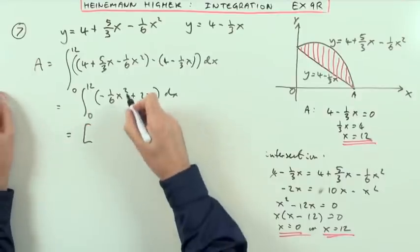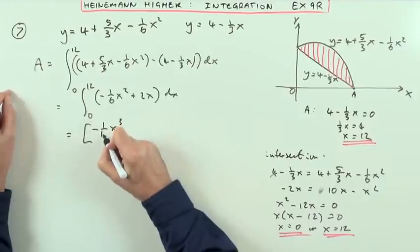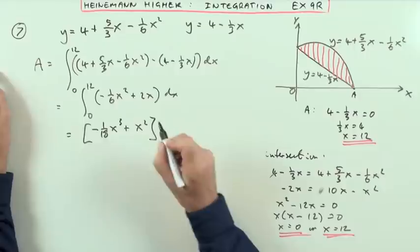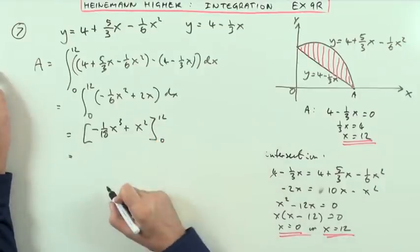So I'm now evaluating it. So it's x to the 3, divide by 3. So that means I've got an 18 in the denominator. x to the 2, divide by 2. At least that term turned out nicely. Work it out at 12. Work it out at zero.